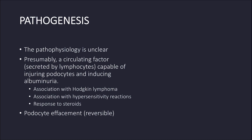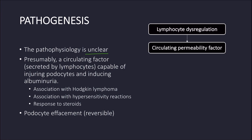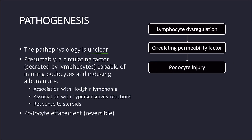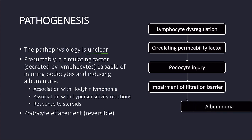The pathophysiology of minimal change disease is not well understood but is thought to be caused by dysregulation of lymphocytes that causes them to release a permeability factor. The identity of this permeability factor is still unknown but it is thought to be a cytokine. This factor is capable of causing injury to the podocyte, which results in an impairment of the filtration barrier leading to albuminuria.